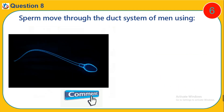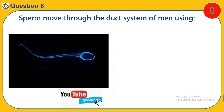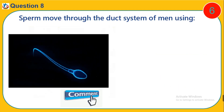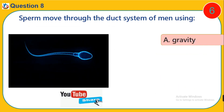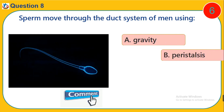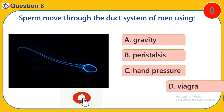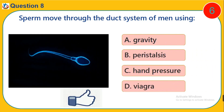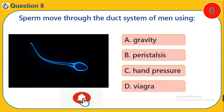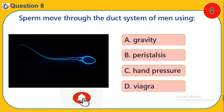Question 8. Sperm move through the duct system of men using. A. Gravity. B. Peristalsis. C. Air pressure. D. Viagra.